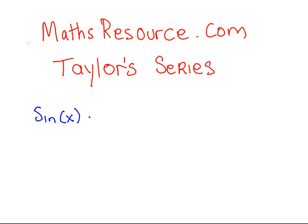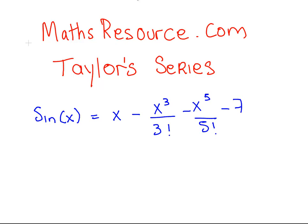The Taylor series for sine of x equals x minus x cubed over 3 factorial, minus x to the power of 5 over 5 factorial, minus x to the 7 over 7 factorial, and so on.